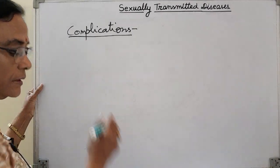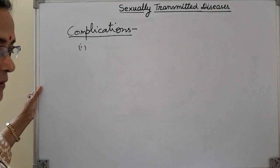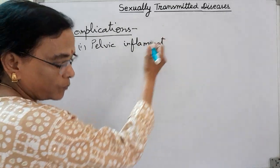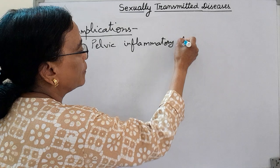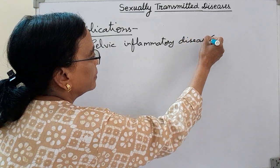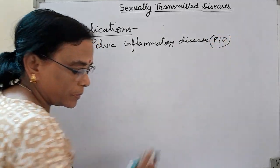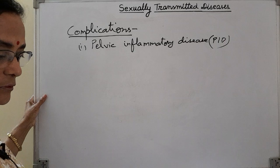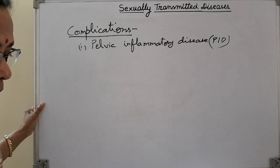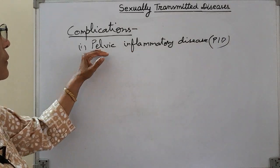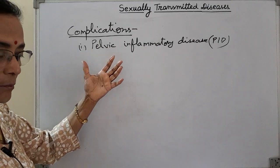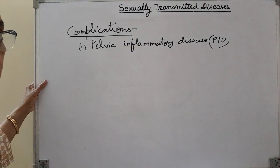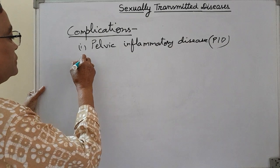The complications that can arise include: first, Pelvic Inflammatory Disease (PID) — infection of the pelvic region including the uterus, fallopian tubes, and ovaries, causing lower abdominal pain. Second is abortion — expulsion of the fetus from the uterus before the 20th week of gestation.